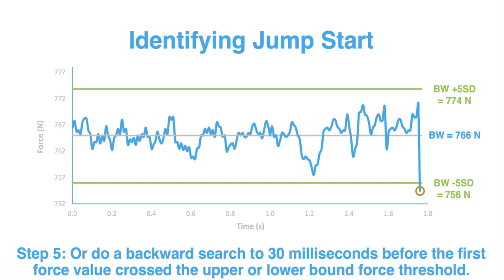There are two step-five options. First, you can do a backward search to the last value representing body weight, and begin your numerical integration at that point. Alternatively, you can do a backward search to 30 milliseconds before that first force value crossing the upper or lower bound threshold — this may not coincide exactly with the average body weight. That second option is in line with what Owen et al. put forward in 2014 and is the most broadly used approach for identifying the jump start in the scientific literature. The first option is what some of us have started using in our own research. Either approach would be considered acceptable.